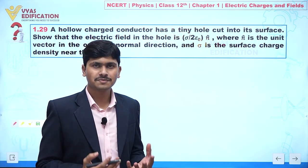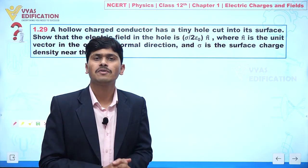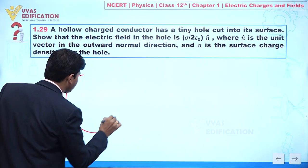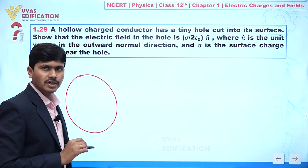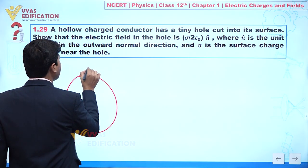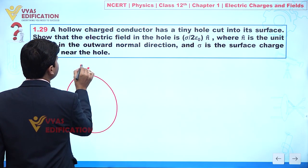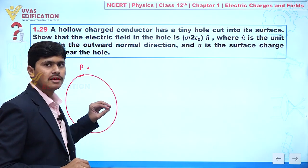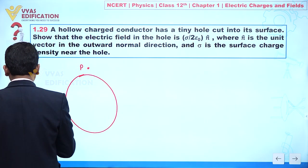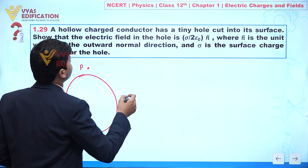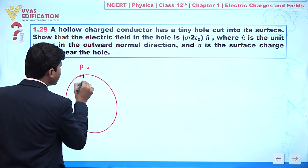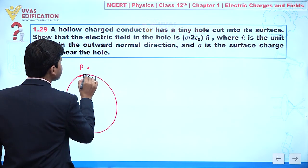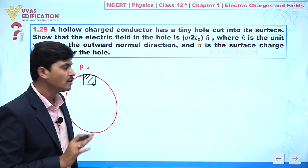Now concentrate on the screen. Let's take an example of a sphere — we can take any conductor. So let's suppose we have this hollow sphere, and let's suppose we are talking about an outermost point P. Now, a tiny hole is cut on its surface, meaning this part is removed from the sphere.